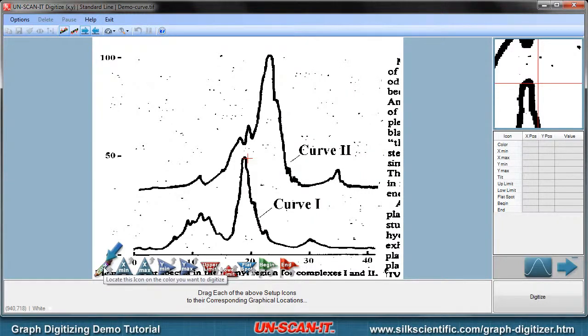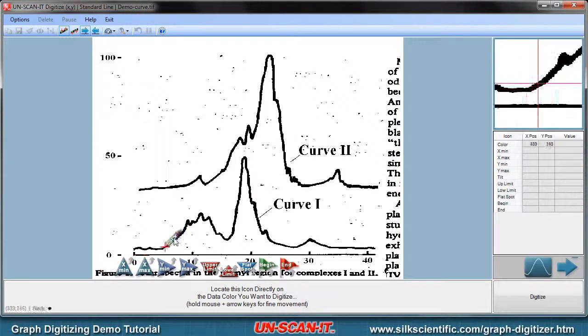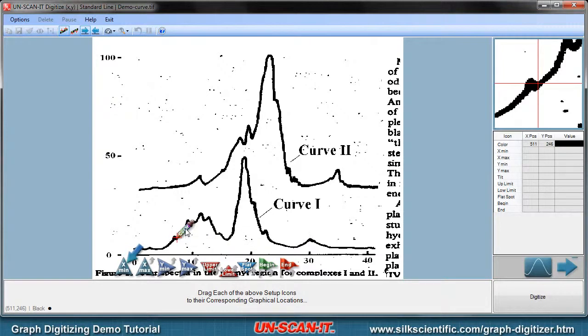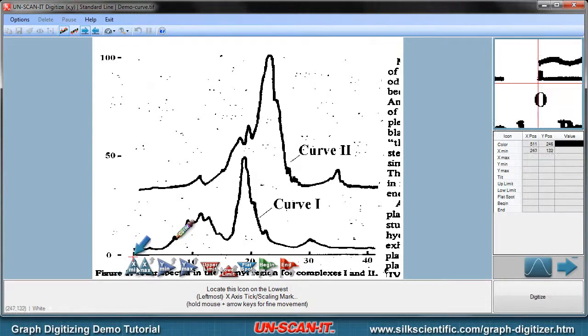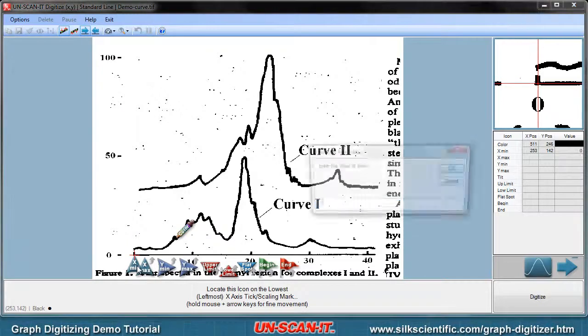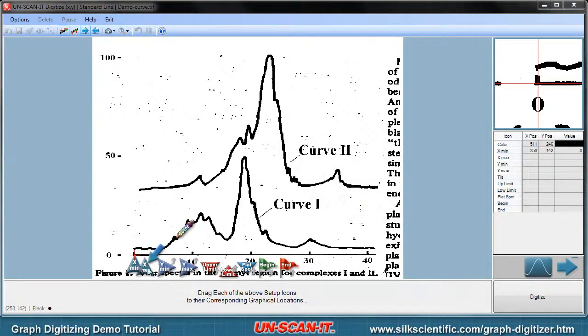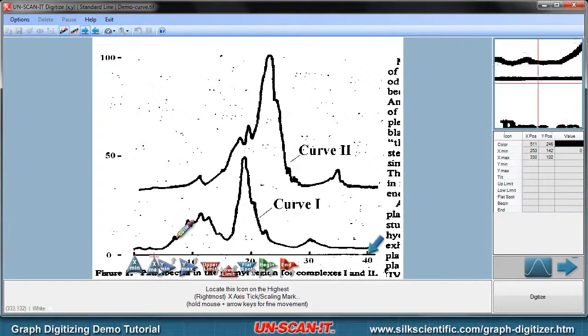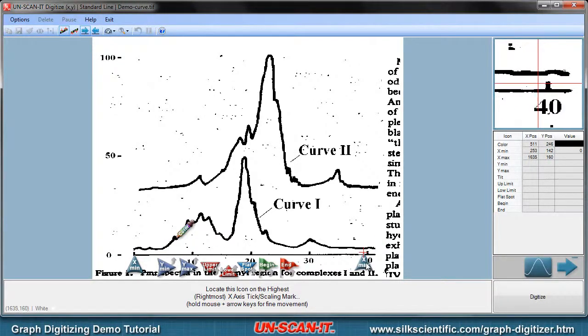The color icon identifies the line color you want to digitize. The Xmin icon should be placed at the leftmost x-axis scaling mark and the appropriate value entered. A similar process should be used for the Xmax, Ymin, and Ymax setup icons.